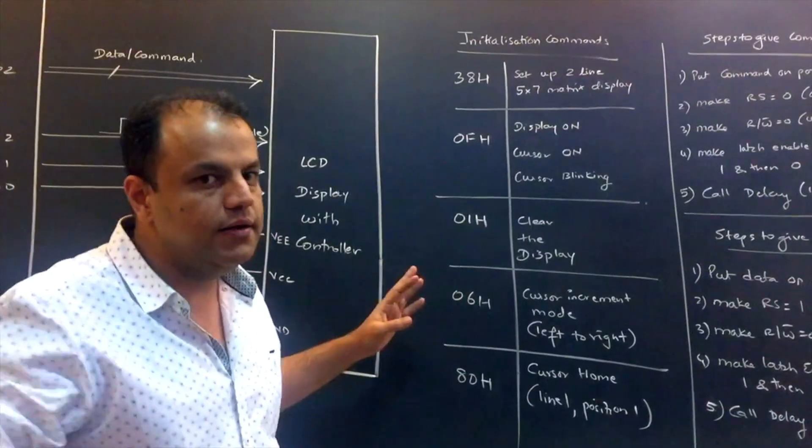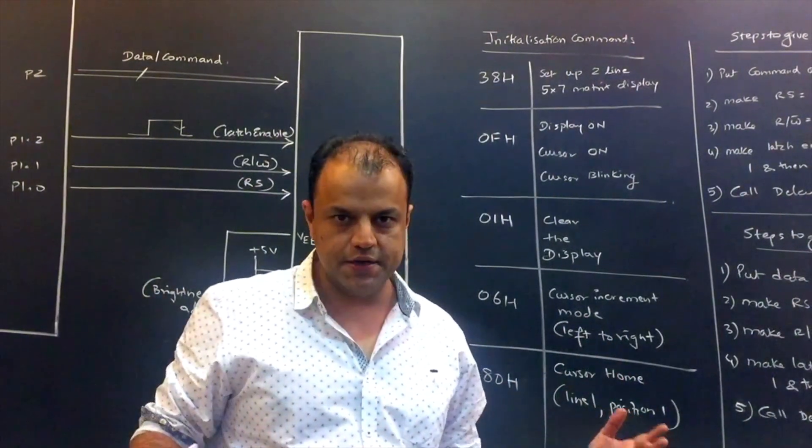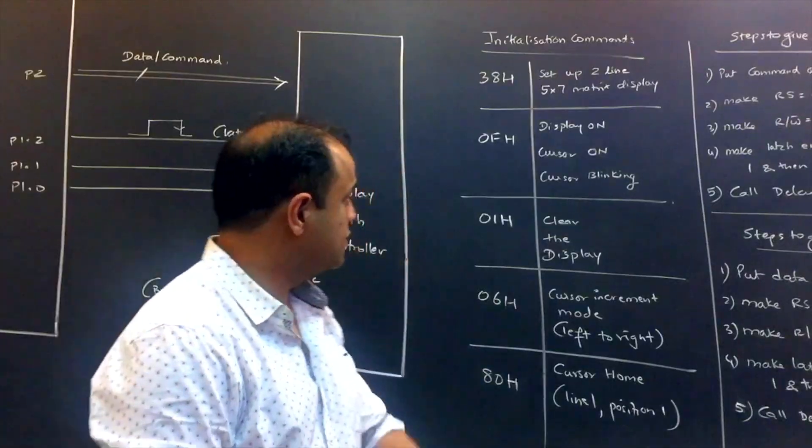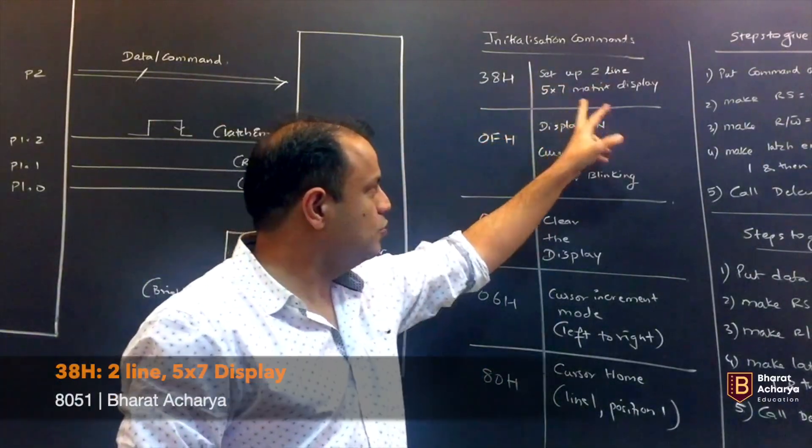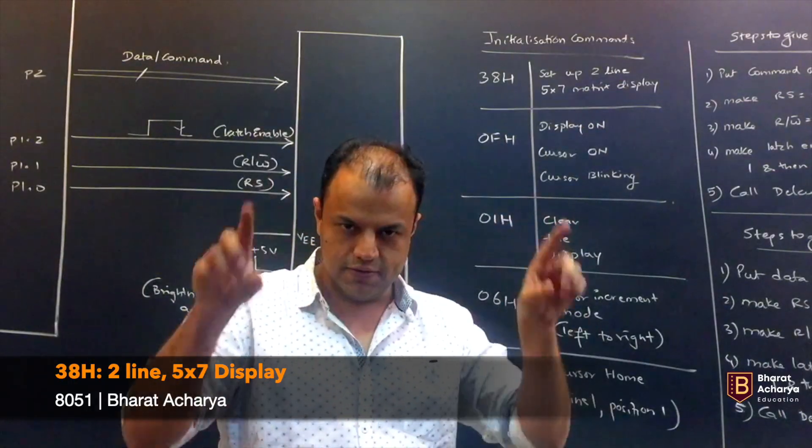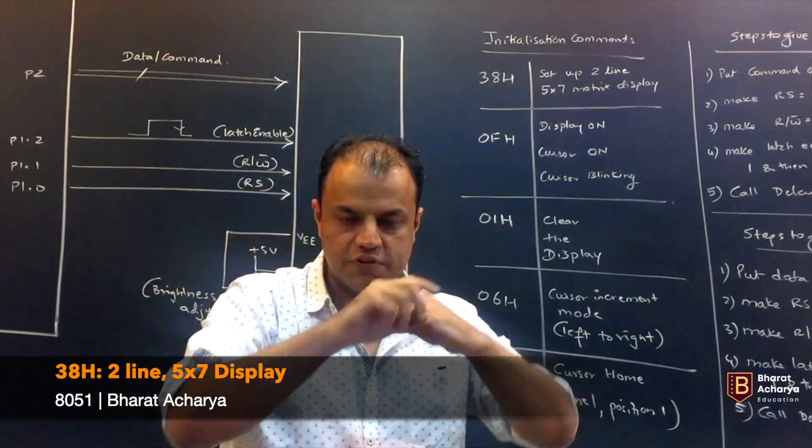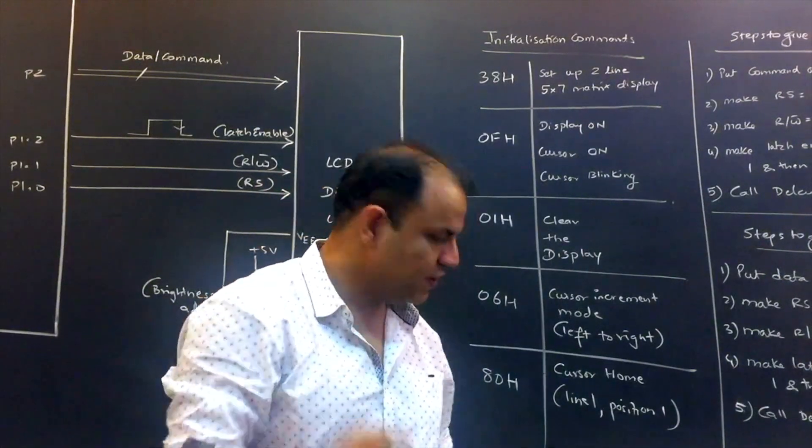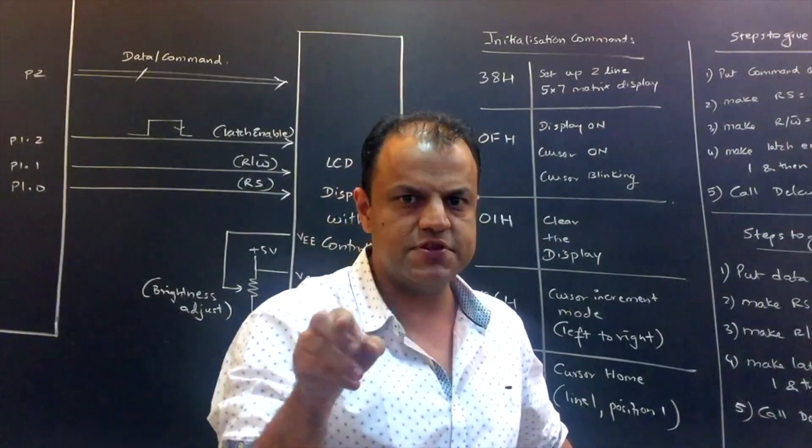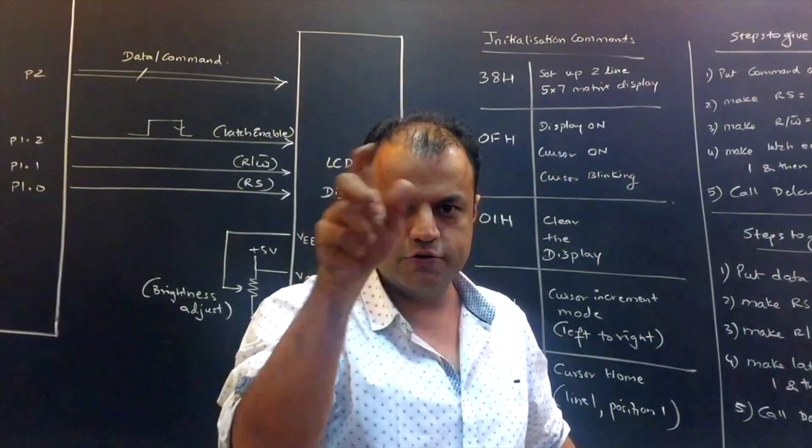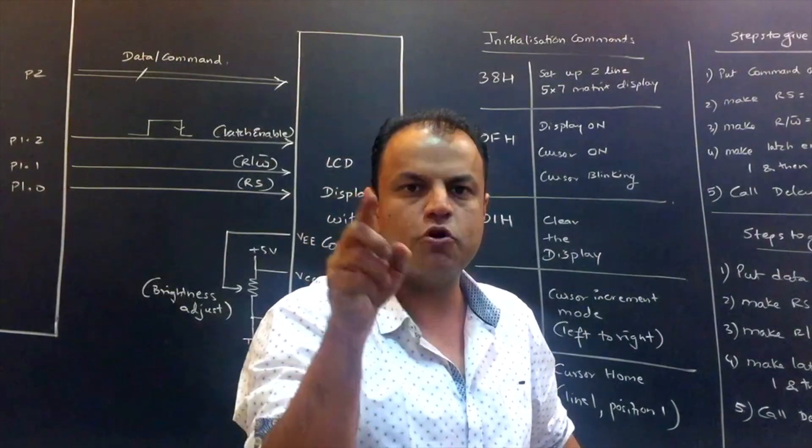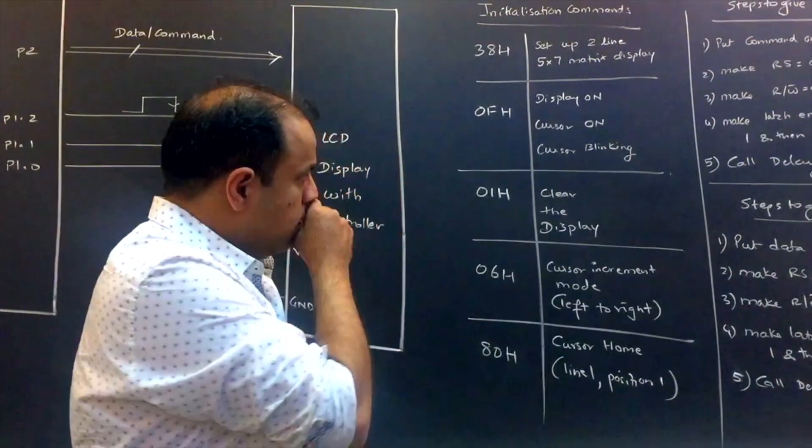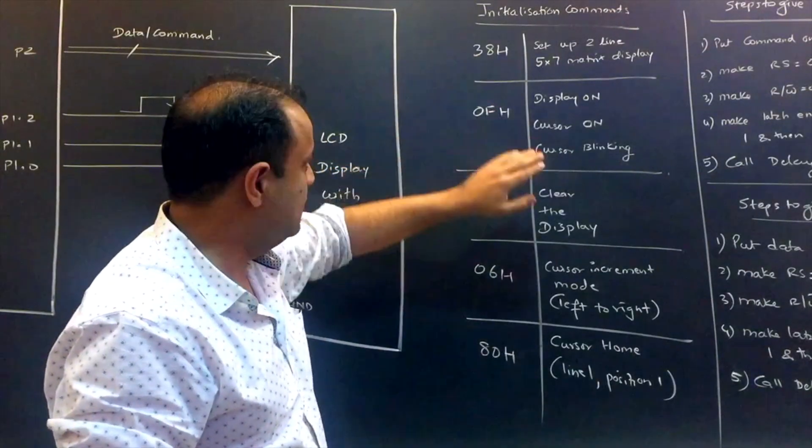Now these are your command values. There are numerous commands that can be given. We have taken one particular orientation. So the value of the first command 38 sets it up as a 2 line 5 into 7 matrix display. 2 line as in the screen pixels will be divided into 2 lines. So you'll have 2 rows on display. And each character will be formed by a combination of 5 into 7, 35 pixels.